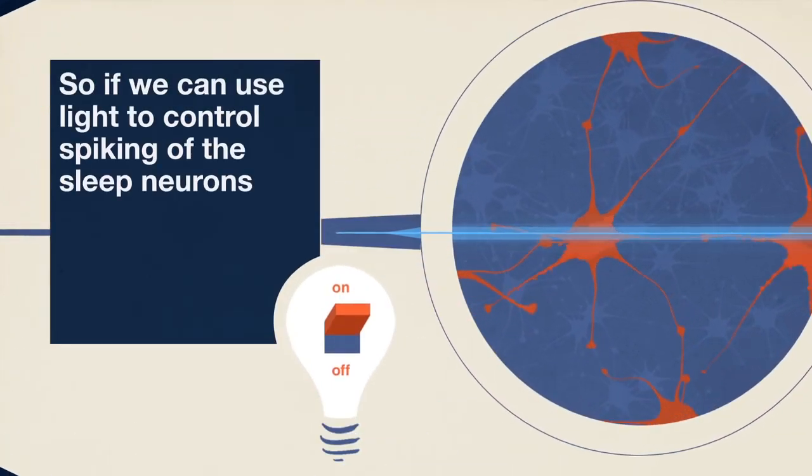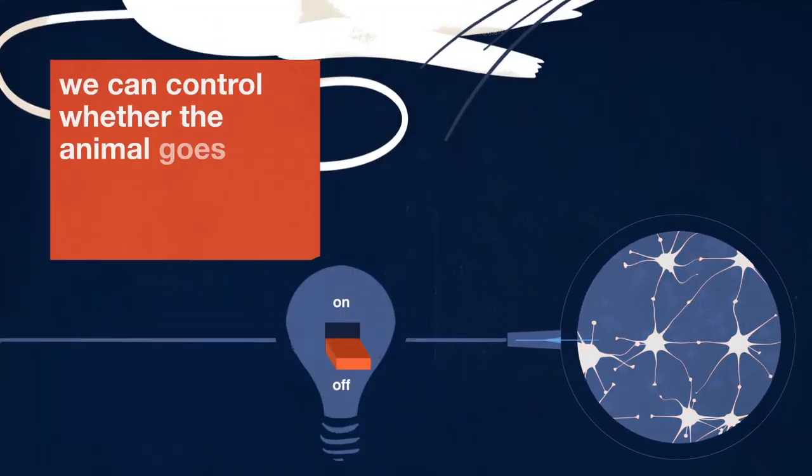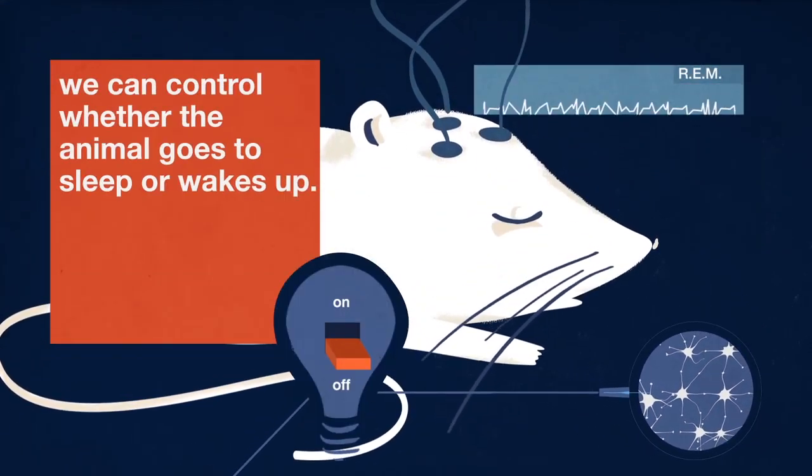So if we can use light to control spiking of the sleep neurons, we can control whether the animal goes into sleep or wakes up.